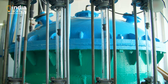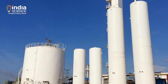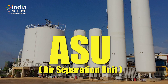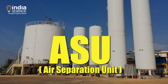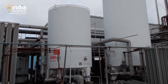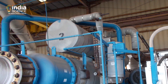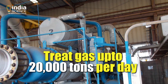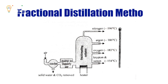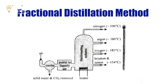There are several methods to produce medical oxygen. The most common commercial method is the separation of air in an Air Separation Unit, or ASU. ASUs are plants that treat large volumes of gas, from a few hundred tons to 20,000 tons per day. ASUs use a method called the fractional distillation method to produce pure oxygen.